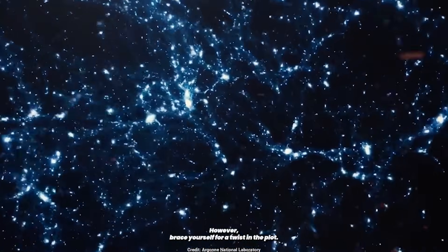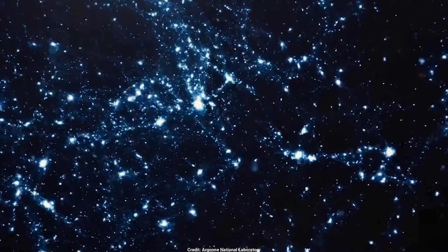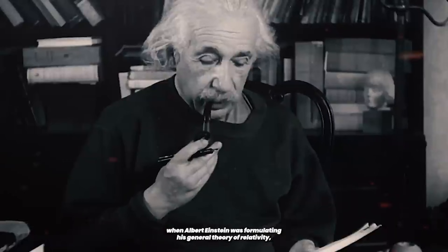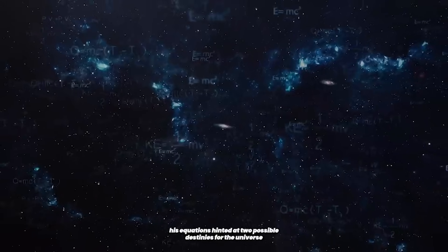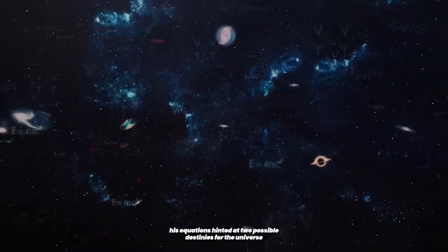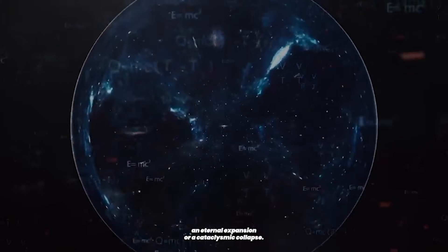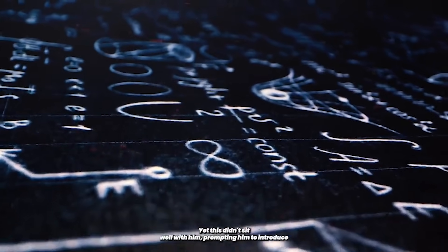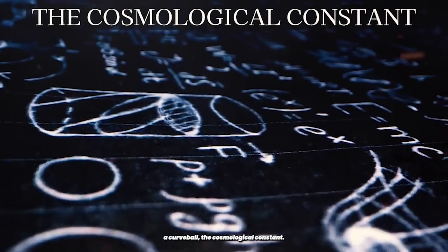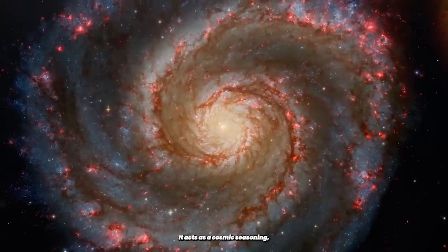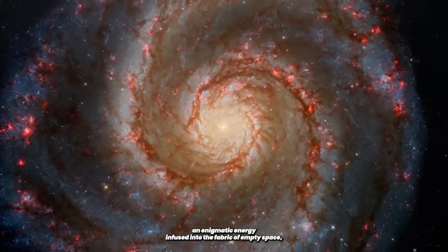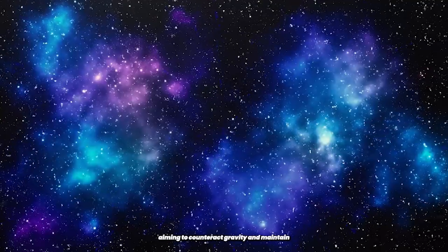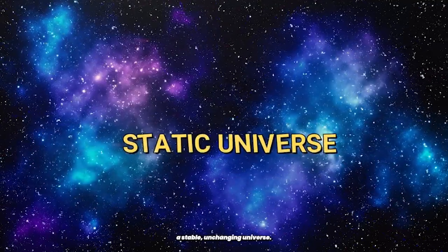However, brace yourself for a twist in the plot. Over a century ago, when Albert Einstein was formulating his general theory of relativity, his equations hinted at two possible destinies for the universe: an eternal expansion or a cataclysmic collapse. Yet this didn't sit well with him, prompting him to introduce a curveball, the cosmological constant. It acts as a cosmic seasoning, an enigmatic energy infused into the fabric of empty space, aiming to counteract gravity and maintain a stable, unchanging universe.